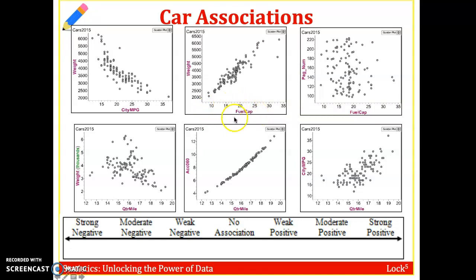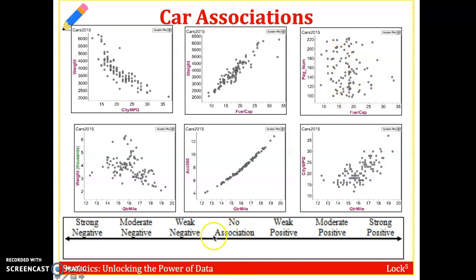The page number in consumer reports should have really nothing to do with fuel capacity. The page number is purely alphabetical — a Subaru would be toward the end, an Acura at the beginning. So this plot looks like a shotgun blast, a complete scattering of data. This would have little to no association.